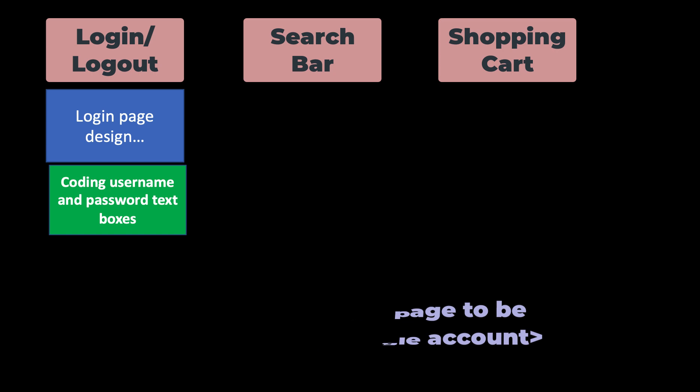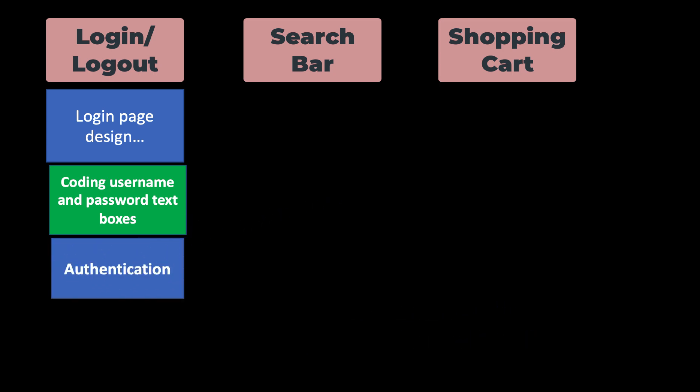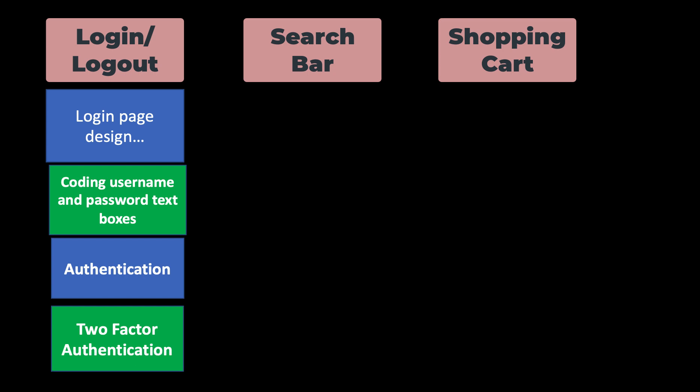I will place it here under the login/logout epic, but I will place it under the previous user story because it has less priority than that. The activity here could be: need to code for a two-factor authentication implementation. So this comes last.